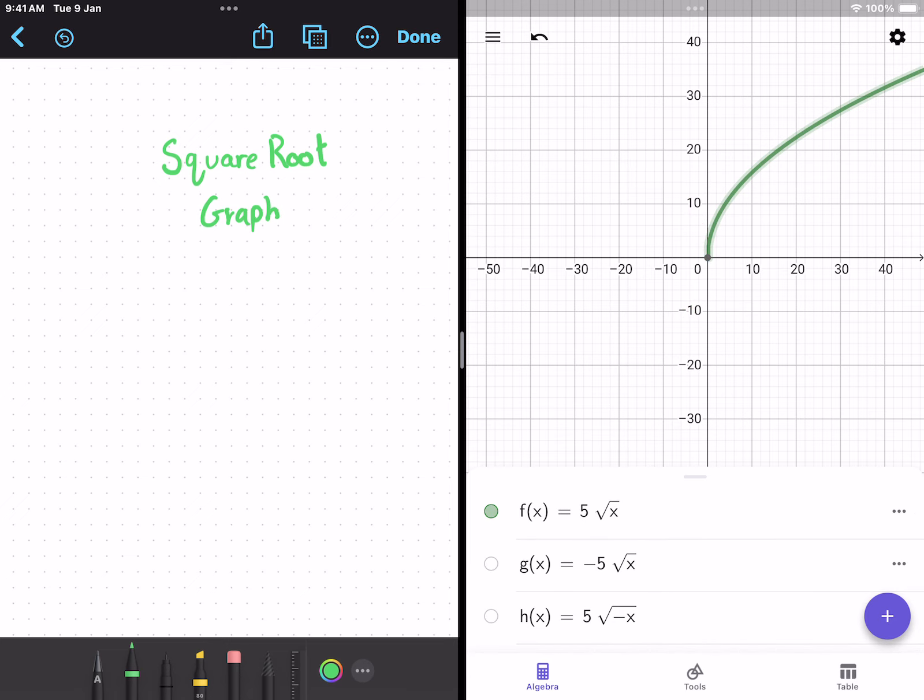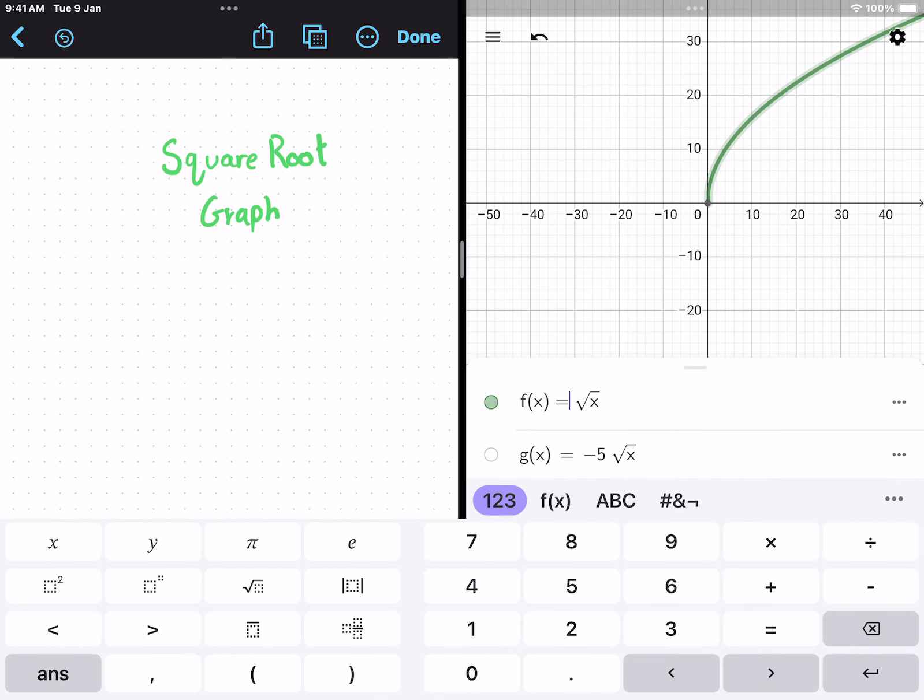We've got the square root graph 5 root x, and you're probably asking what is the 5? Well, the 5 is just the dilation factor from the x-axis, and it can be any number we like.